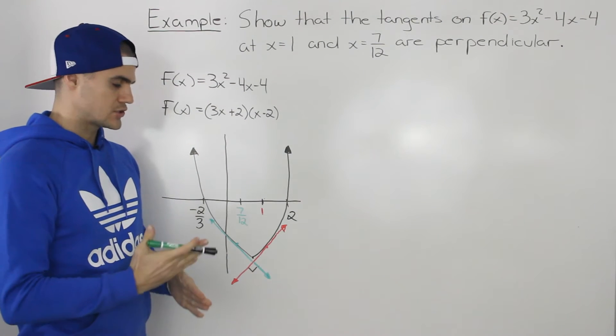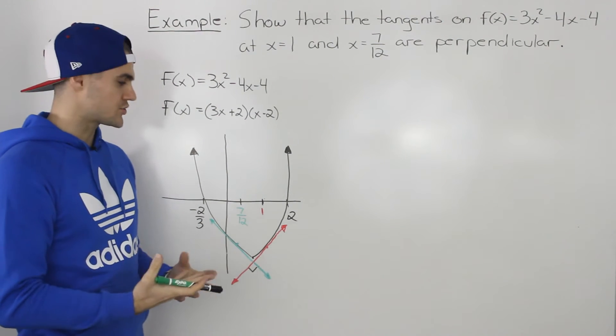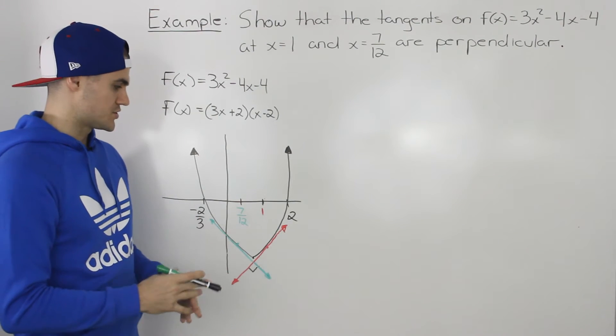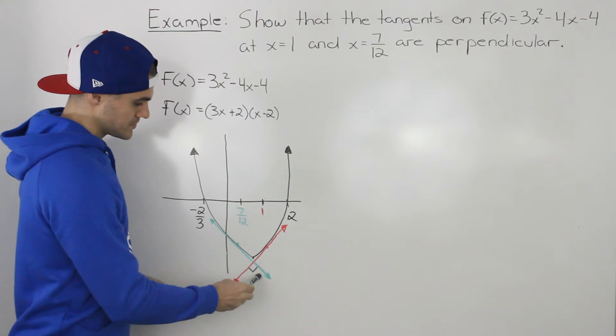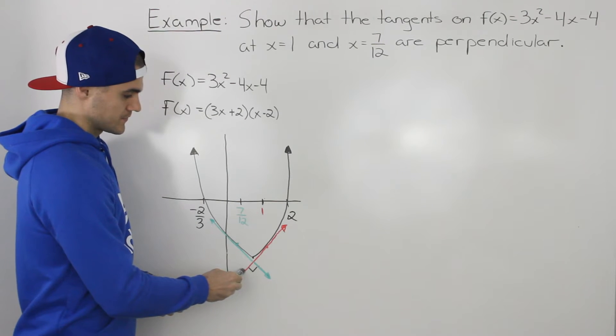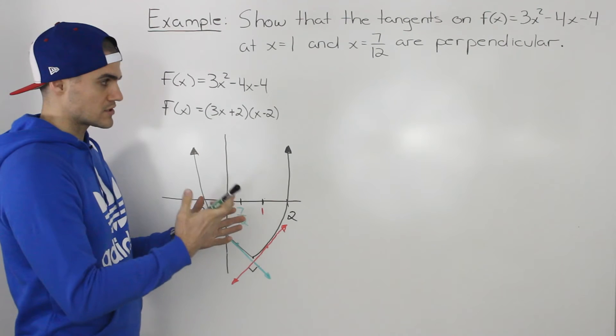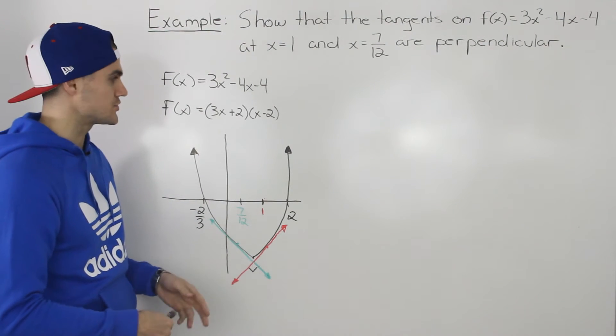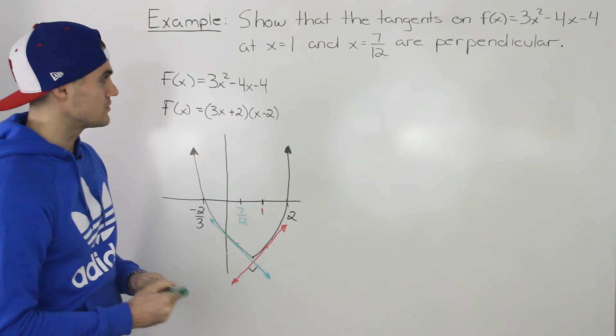We know that two lines that are perpendicular to each other have slopes that are negative reciprocals of each other. So if we can find the slopes of these tangents, and then show that the slopes are negative reciprocals of each other, then we know that these two tangents are perpendicular. So let's do that.